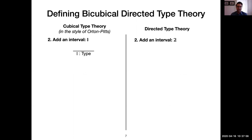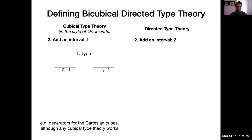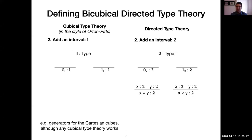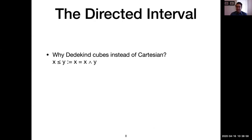To add an interval: in cubical type theory you add an axiom requiring a type for the interval with two distinct endpoints zero and one. We used Cartesian cubes for our base cubical type theory, though we're largely agnostic to the choice. For the directed interval we do the same — add an interval type, two distinct endpoints — and also choose to add connections: for two interval variables x and y we can form the minimum of x and y or the maximum of x and y, with equations specifying how these work.